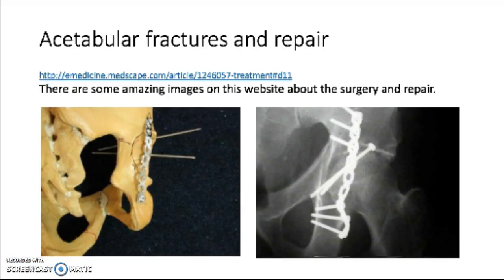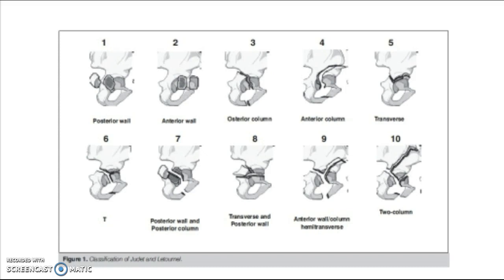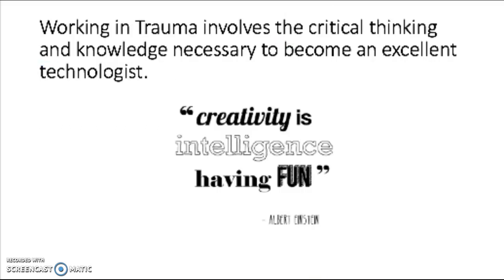These are the acetabular fractures and repairs — there are really amazing pictures here with screws and framework to hold all the bones in place. These are the classical Judet and Letourneau classifications of acetabular fractures. This image shows stabilization after trauma and post-surgical repair — this was the injury, this was stabilizing it, and then this was the repair afterward. When you're working in trauma, you have to think critically and have the base knowledge to understand what you're looking at to become an excellent technologist.